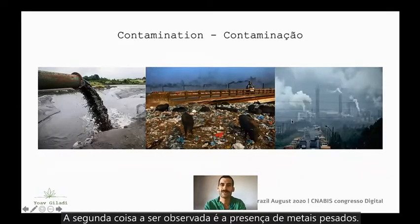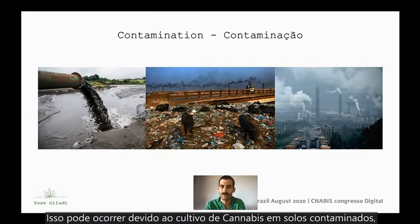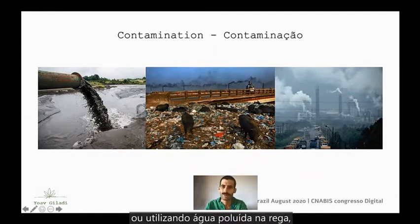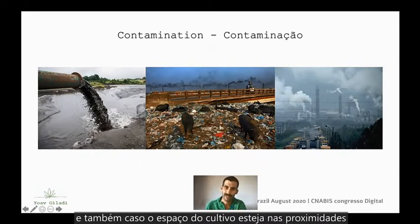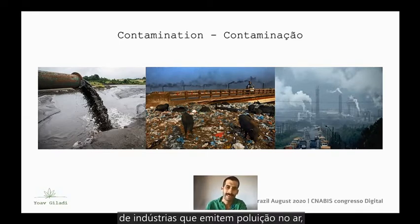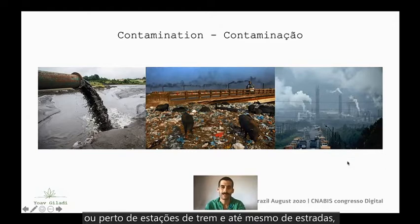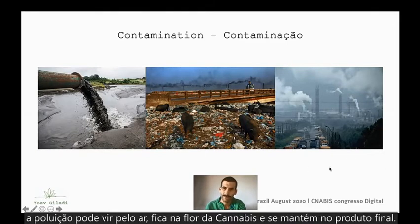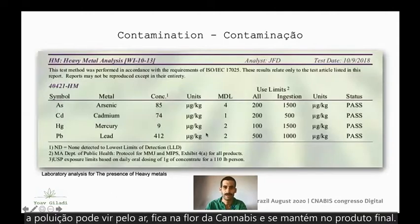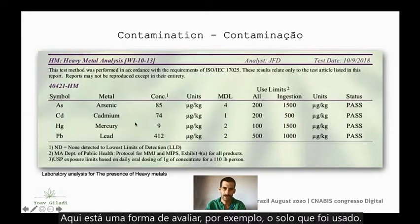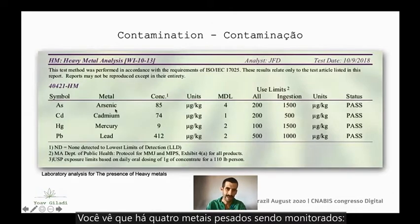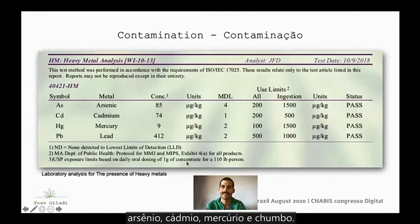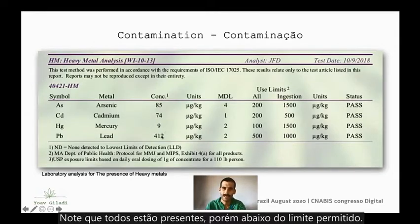The second thing to look out for is the presence of heavy metals. Heavy metals can come from growing cannabis in contaminated soil or using polluted water. Also, if the growing facility is in proximity to an industrial factory that emits air pollution, or next to a train station or highway, then pollution can come from the air, stain the cannabis flower, and go on to the cannabis product. Here is an example of how to evaluate the soil being used. You can see four heavy metals being monitored: arsenic, cadmium, mercury, and lead. All of them were present, although they were below the limited amount.